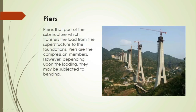Now, piers. As we have already seen, piers are the intermediate supports to the bridge. A pier is that part of the substructure which transfers the load from the superstructure to the foundations. Piers are usually compression members. However, depending upon the loading, there may be eccentricity at times and the piers may be subjected to bending occasionally.